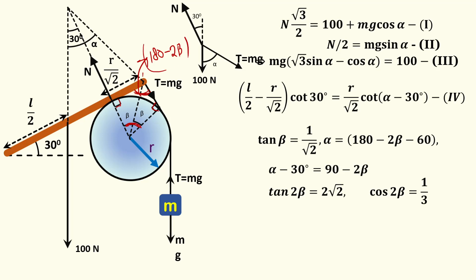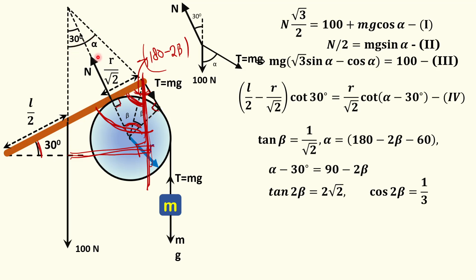This total angle is 180 minus 2 beta. Then, if I make a vertical line through this point, since the rod makes 30 degrees, extending the line gives 90 degrees, so this angle is 60 degrees. Subtracting 60 degrees from the total gives us the remaining angle, which is nothing but alpha — the angle made by the tension with the vertical. From here, alpha minus 30 equals 90 minus 2 beta. I use this form because in equation 4, I need tan of (alpha minus 30), which becomes tan(90 minus 2 beta), which equals cot 2 beta.